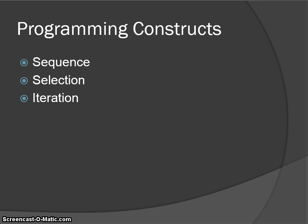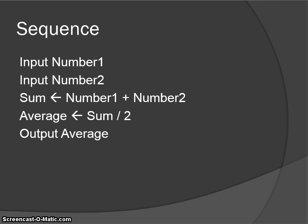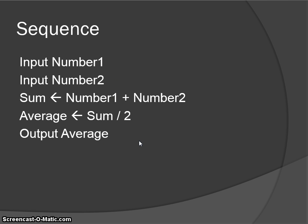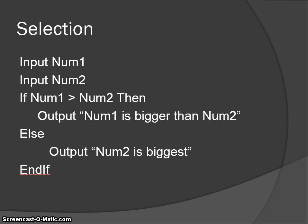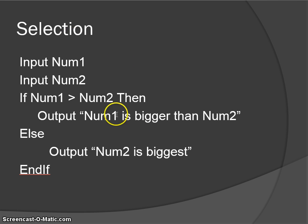So those programming constructs — the main ones are sequence, selection, and iteration. Another example of sequence: two numbers being input, both added together and assigned to sum, the sum divided by 2 with the result assigned to average, and we output the average. That is a piece of code to work out the average of two numbers. An example of selection: input one number, input a second number; if num1 is bigger than num2, then output 'num1 is bigger than num2'; else output 'num2 is biggest.' These are all examples of pseudocode, which is the best approach to use when planning code.